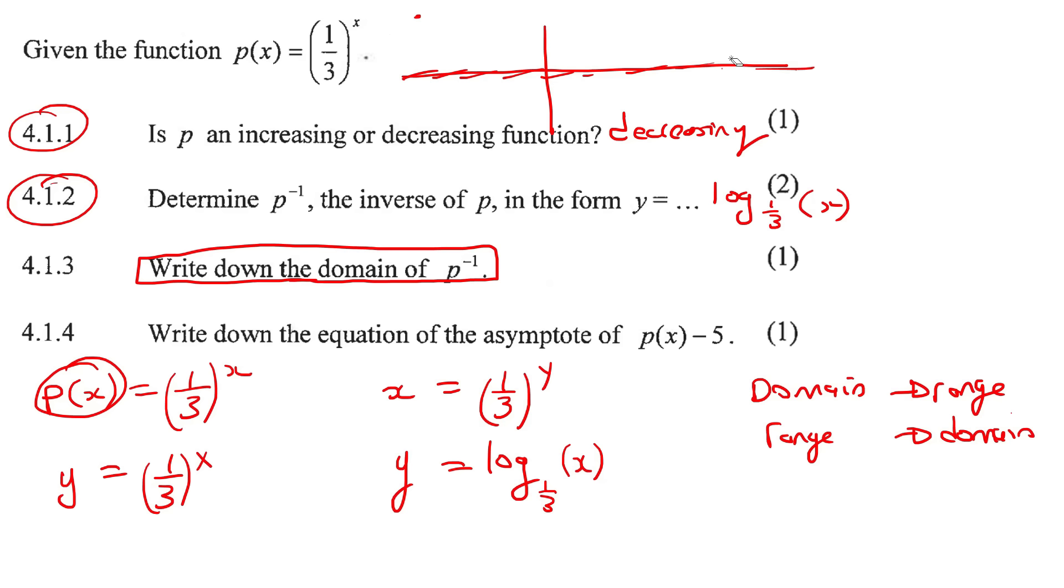So it would keep going down, down, down, down, and it would get very close to zero. So the range would be that the y value must be larger than zero. So we'd say y is bigger than zero. If you prefer interval, you would say zero up to infinity, round bracket because it doesn't touch the zero.